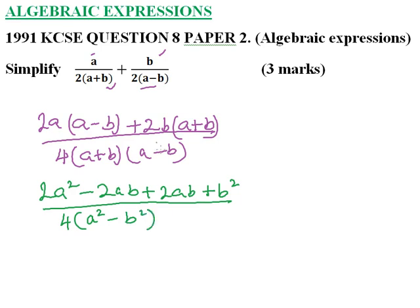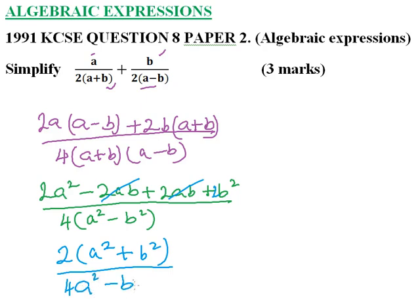All this is divided by 4 into bracket a squared minus b squared, because this is a difference of two squares. So 2a squared minus 2ab will disappear. We can factor out 2. We have 2a squared plus b squared divided by 4 into a squared minus b squared.